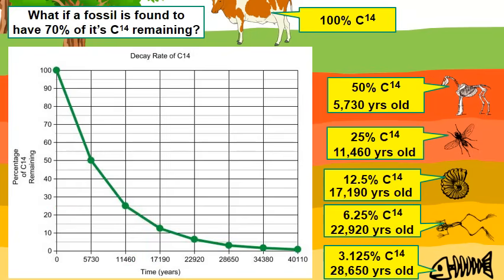As useful as carbon dating is, the graph does reveal a problem — eventually the amount of carbon-14 becomes so small it's very difficult to measure. Carbon dating is only accurate to about 50,000–60,000 years. If something is older than that, other isotopes have to be examined.